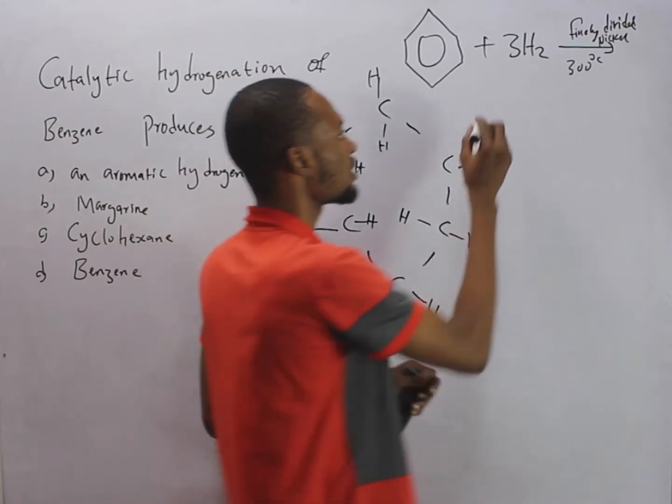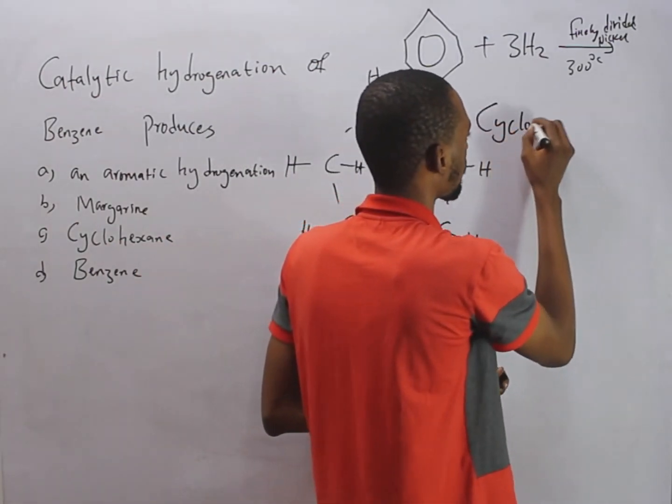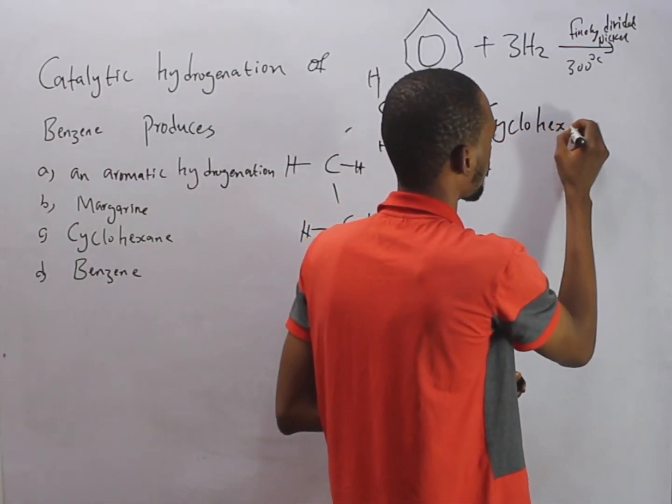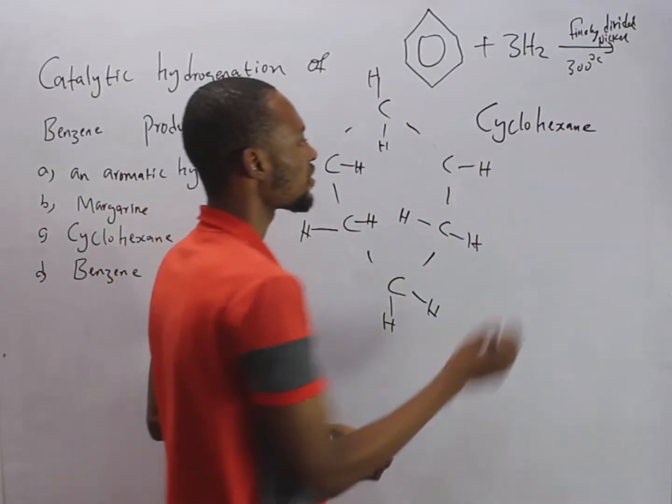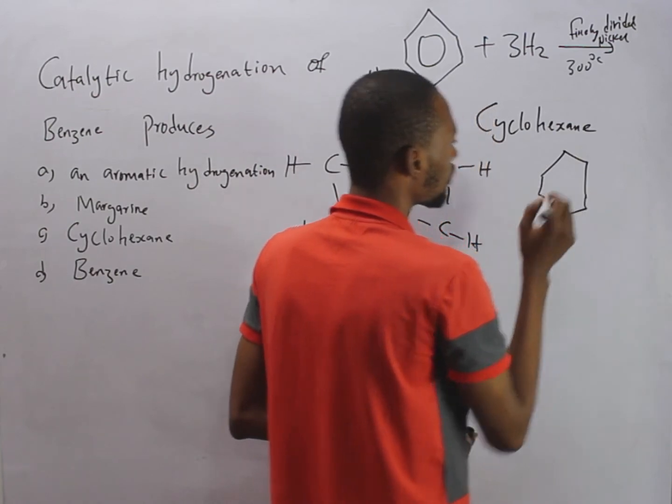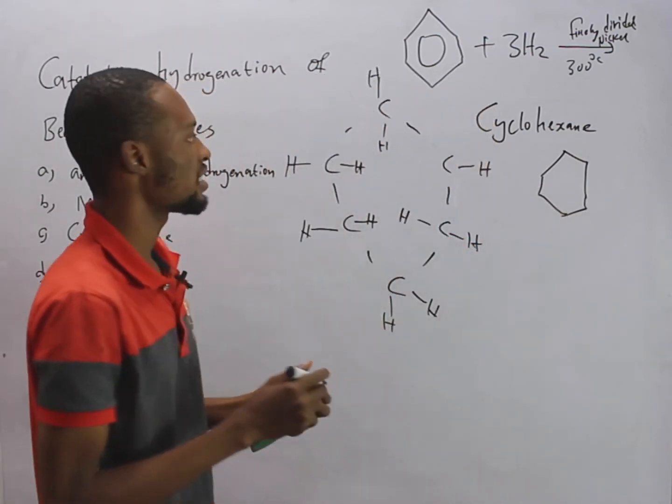So this is simply cyclohexane. So this is the product of the catalytic hydrogenation of benzene.